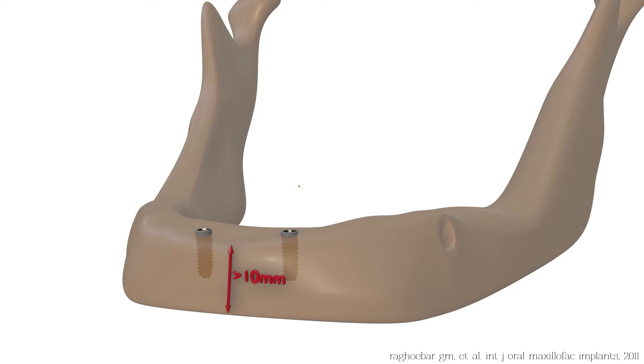In mandibular complete edentulous cases, if bone height is greater than 10 mm, two standard implants are sufficient for an overdenture prosthesis, while four short implants are more advantageous if the bone height is less than 10 mm. Even though one or two of these implants would be lost in the long term, the denture may still be in function.